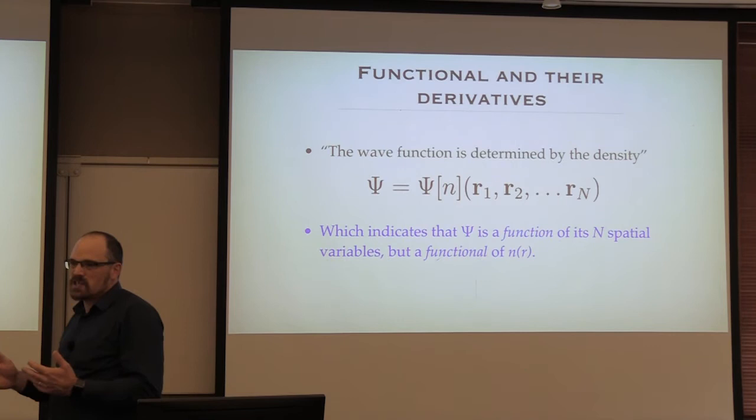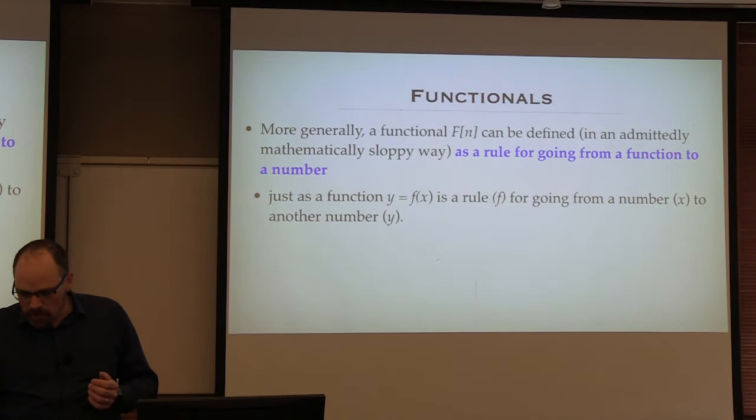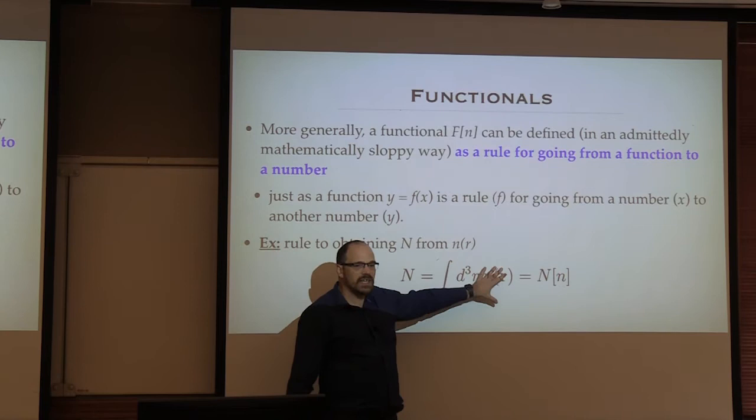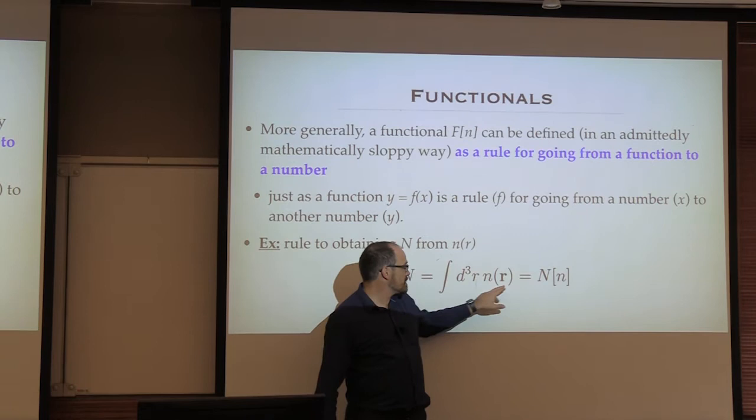A functional is a rule for going from a function to a number. The number of electrons is the integral over the entire space of the density — that's a functional of the density. This is an example of a local functional. Another example is the external potential, which can be seen as a Coulomb-like functional — also a local functional.